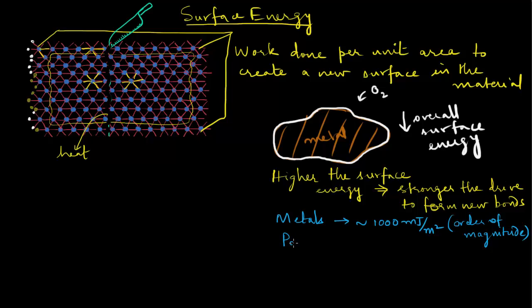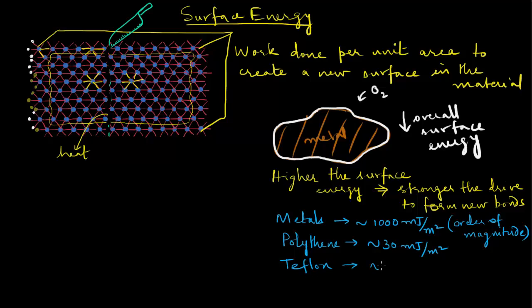If you take polyethylene, for example, the surface energy value quoted is only about 30 millijoules per meter squared — much much lower than what it is for metals. Another example is Teflon, a material that is pretty unique for its extra-low surface energy. Teflon is the material used in coatings of nonstick cookware. Its surface energy value is only about 18 millijoules per meter squared, and it is exactly this property that makes it ideal for nonstick coatings.